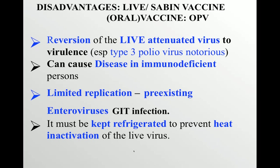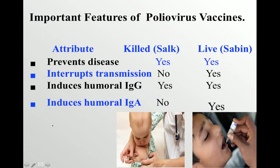The disadvantages of the live Sabin oral vaccine are: it can revert to its live virulent form — especially type 3 poliovirus is notorious for reverting — and can cause paralytic poliomyelitis. It cannot be given to immunodeficient or immunocompromised patients as it can cause disease in them. Limited replication occurs if there is a pre-existing enterovirus GIT infection. It must also be kept refrigerated as it is heat-inactivated.